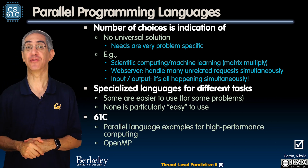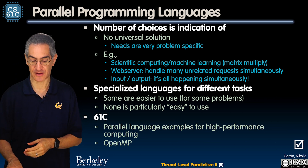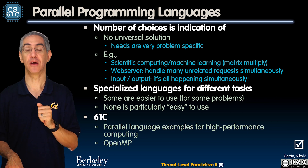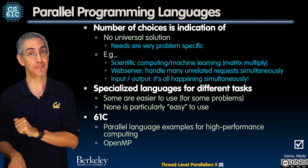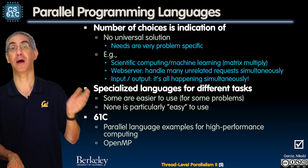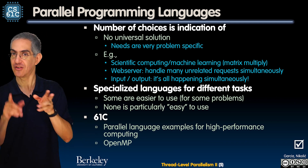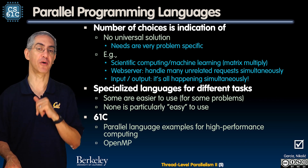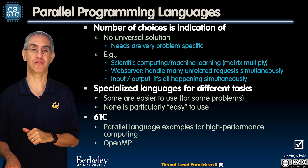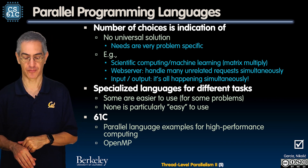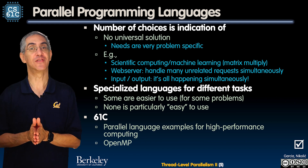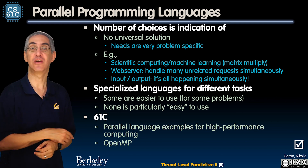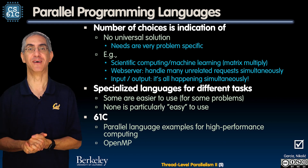What we're going to teach you in CS 61C is parallel language examples for high-performance computing. We'll teach you OpenMP in the next couple of lectures, and after that we'll teach you MapReduce — two things that are really powerful and high-level. Spark and related ideas will also be covered. So next lecture we'll teach you OpenMP. See you there.